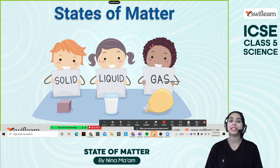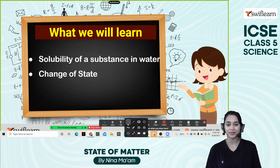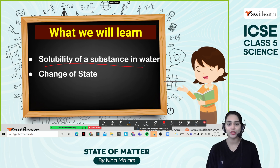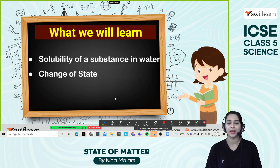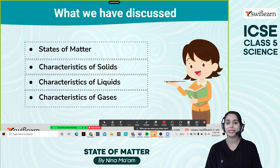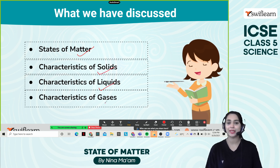Today we are going to learn about states of matter. This is the second part and I hope you remember the first part. Today we are going to learn about the solubility of a substance in water, and the second topic is change of state. So these are the two important things we are going to learn within this chapter. We learned about the states of matter such as solid, liquid, and gas in the previous chapter, and also characteristics of solid, characteristics of liquid, and characteristics of gases as well.